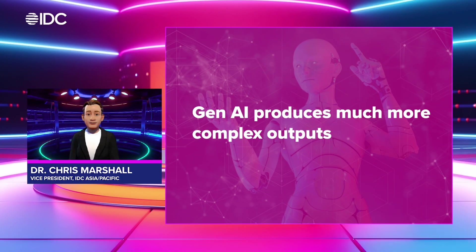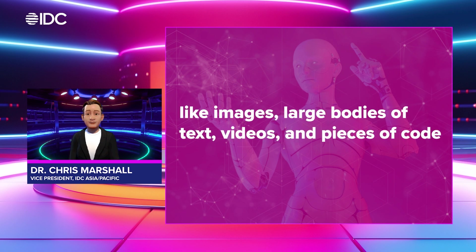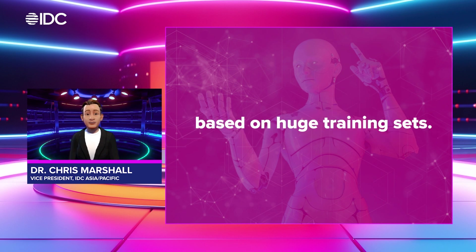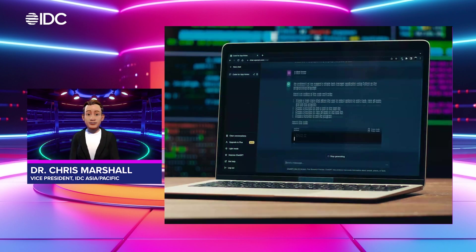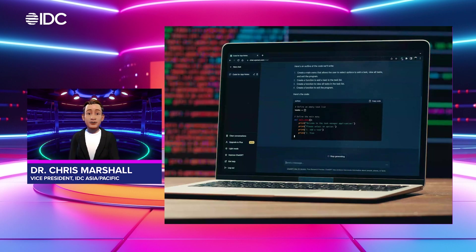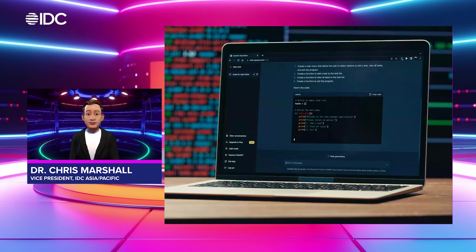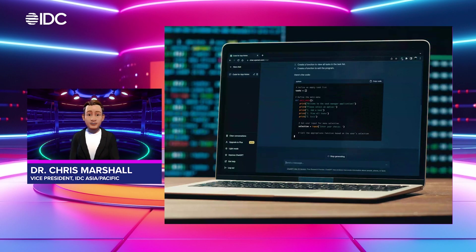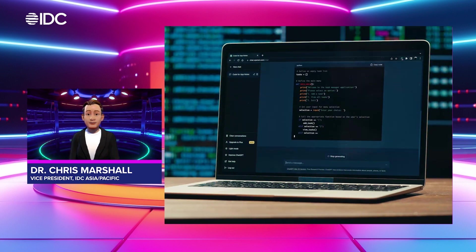Gen AI produces much more complex outputs, like images, or large bodies of text, videos, or even pieces of code — all of this based on huge training sets. Now, ChatGPT, DALL-E, and BARD are all great examples of generative AI applications that produce text or images based on user-given prompts or dialogue. Correct, Chris.